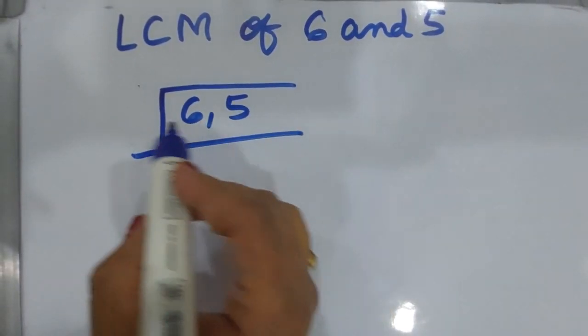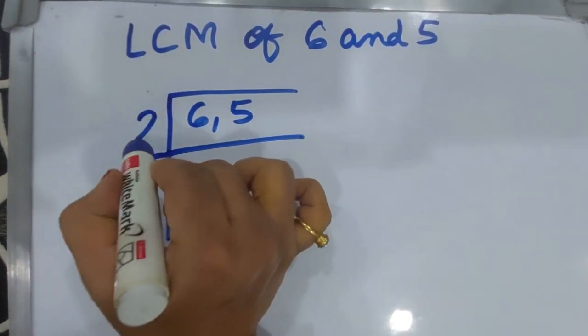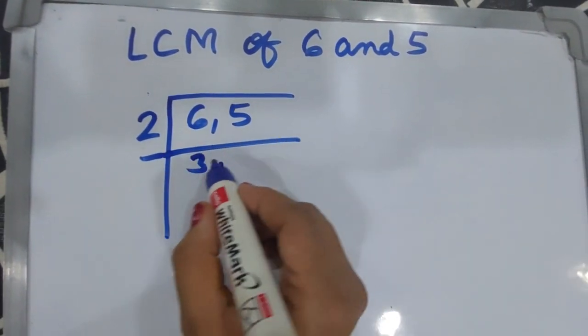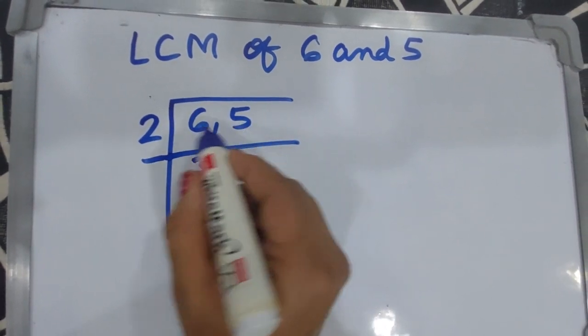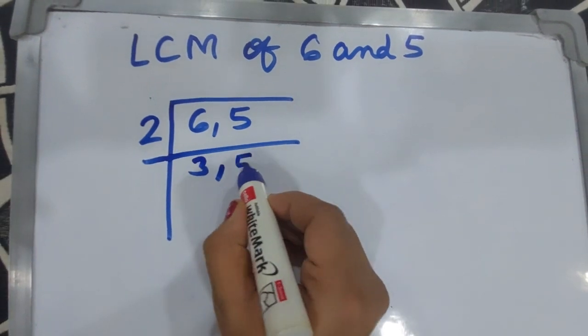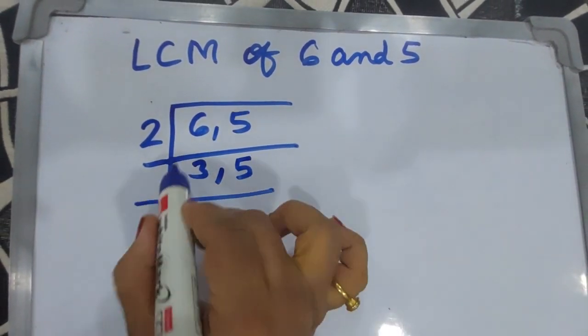The lowest prime number is 2. We can write 2 here. 2 goes into 6, giving us 3. But 5 is not divided by 2, so you write 5 as it is.